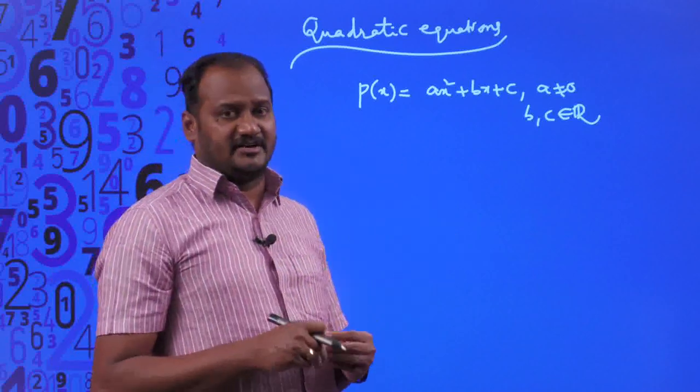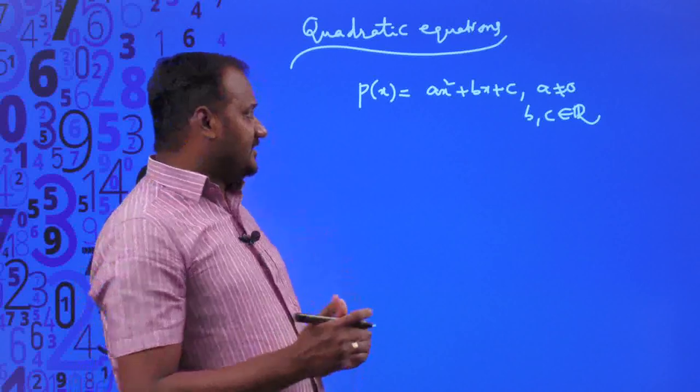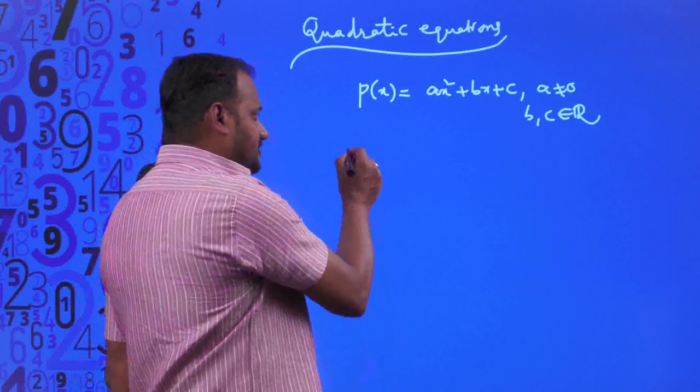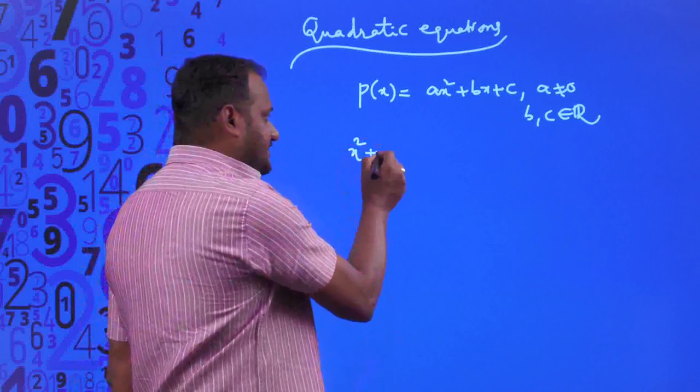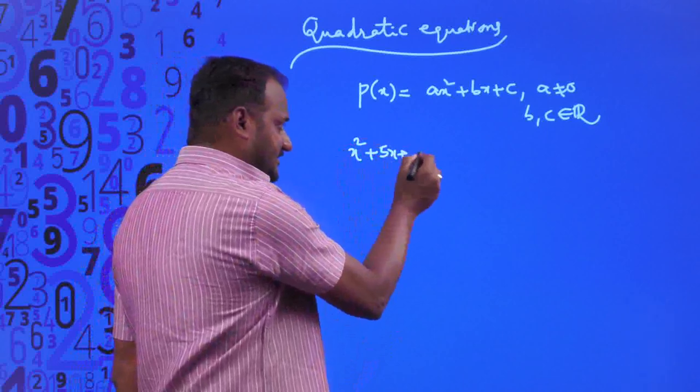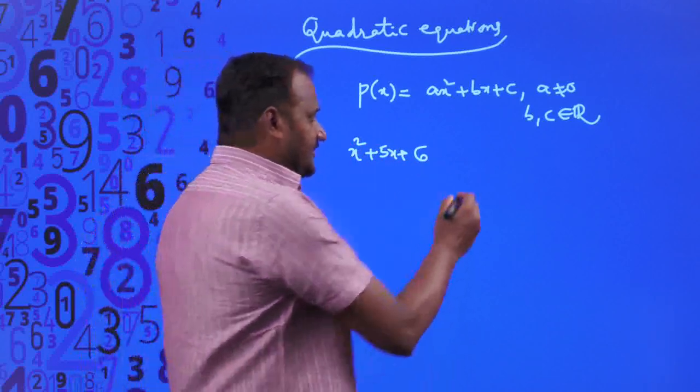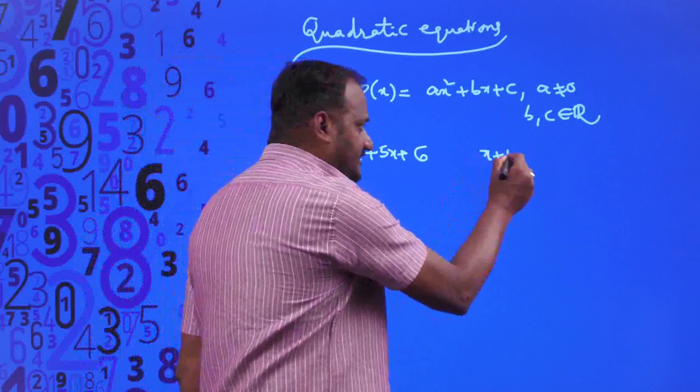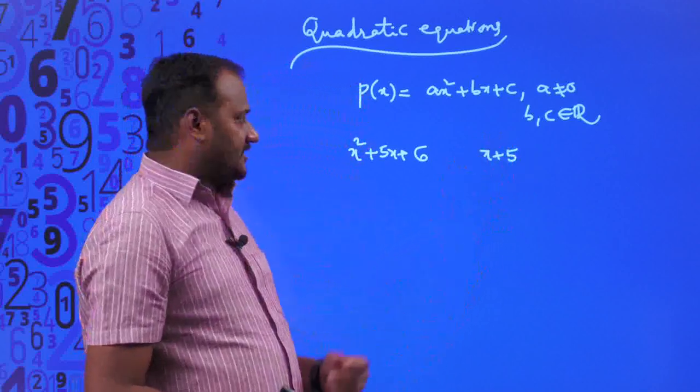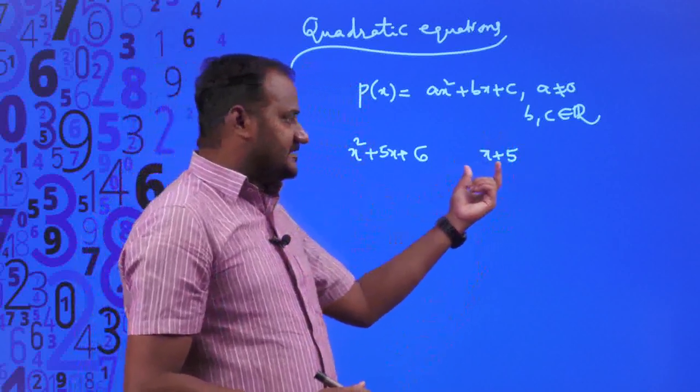Let us try to understand with one example. For example, I have taken x² + 5x + 6, which is a second degree polynomial, and x + 5, which is a linear polynomial. This is a second degree polynomial and this is a linear polynomial.